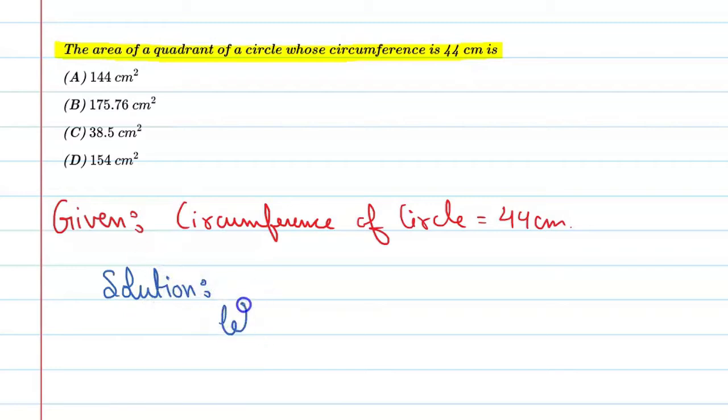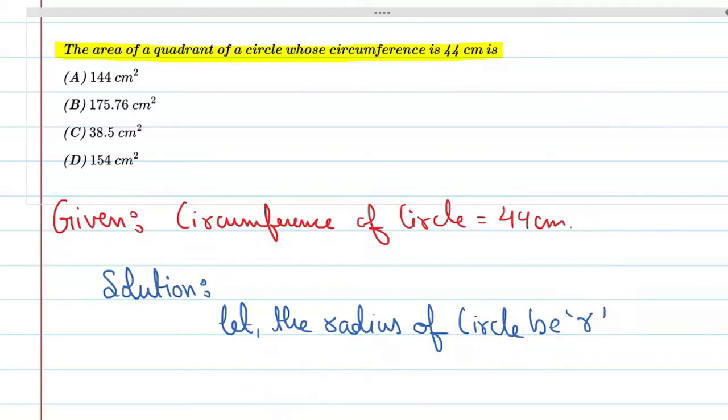Let the radius of circle be r. Okay, so circumference of a circle is what? It is 2 pi r.